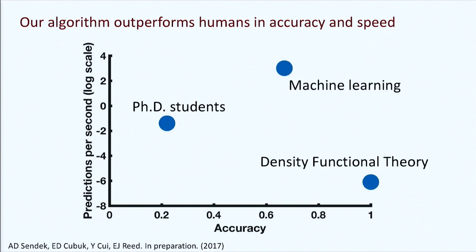Our final performance question: can we beat random guessing? Can we beat humans? This is the Deep Blue-style man-versus-machine comparison. We queried PhD students and compared their results to the model and to density functional theory, plotting time on the y-axis (log scale) and accuracy on the x-axis. Machine learning is more accurate than PhD students, less accurate than density functional theory, but most importantly it's several orders of magnitude faster than both — about four or five orders faster than students and about ten orders faster than existing DFT codes.